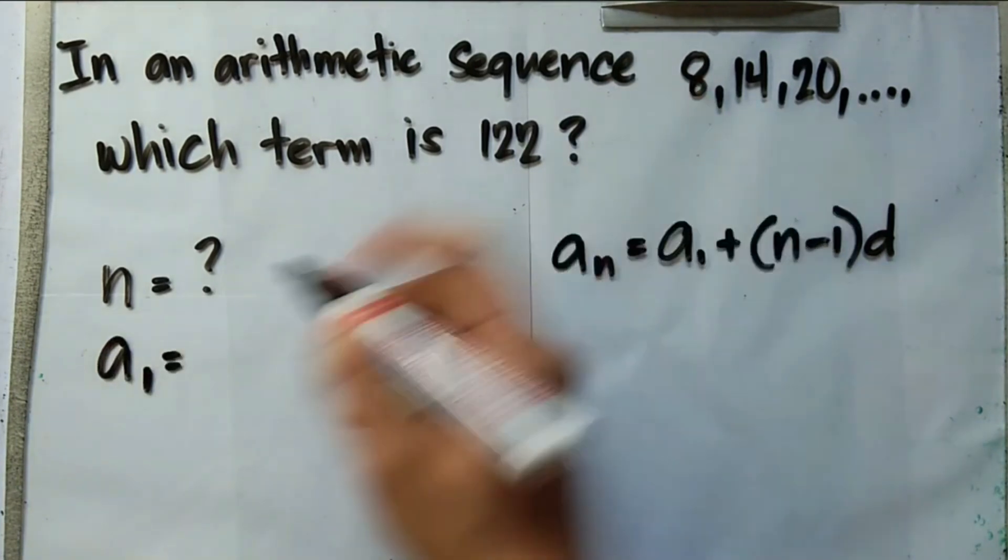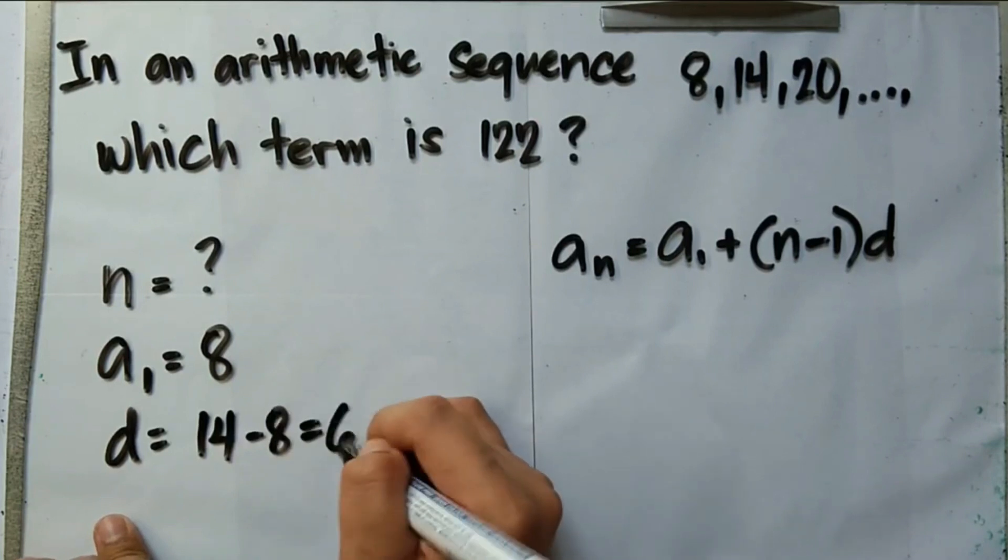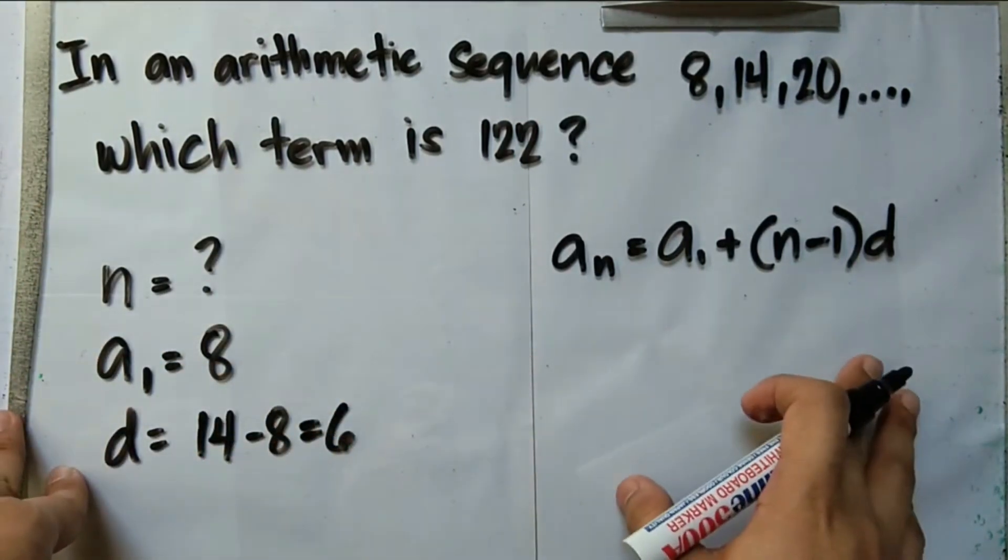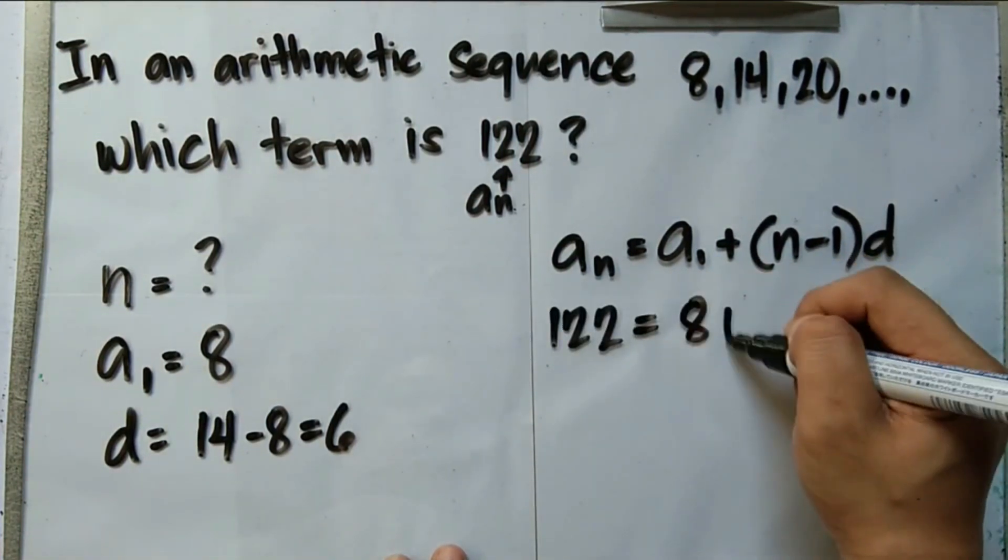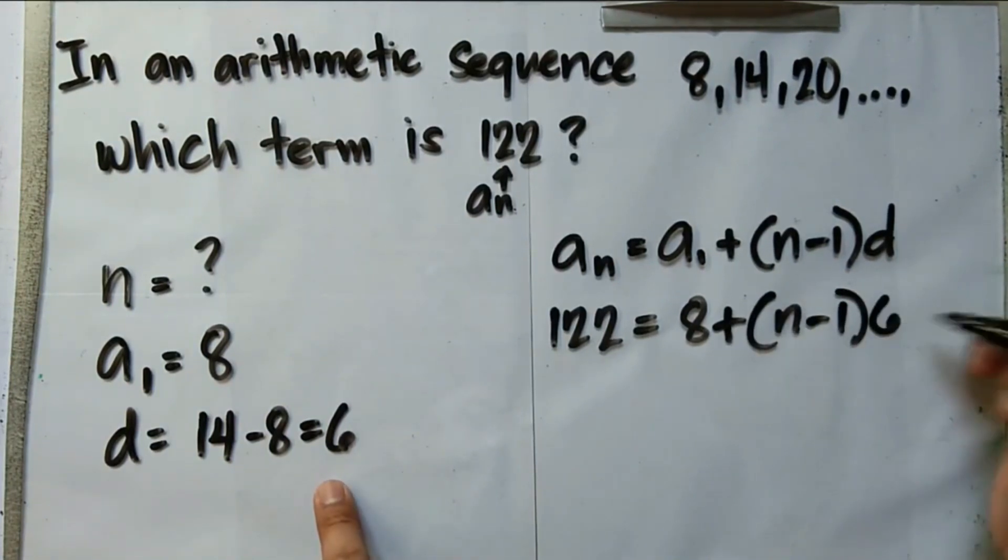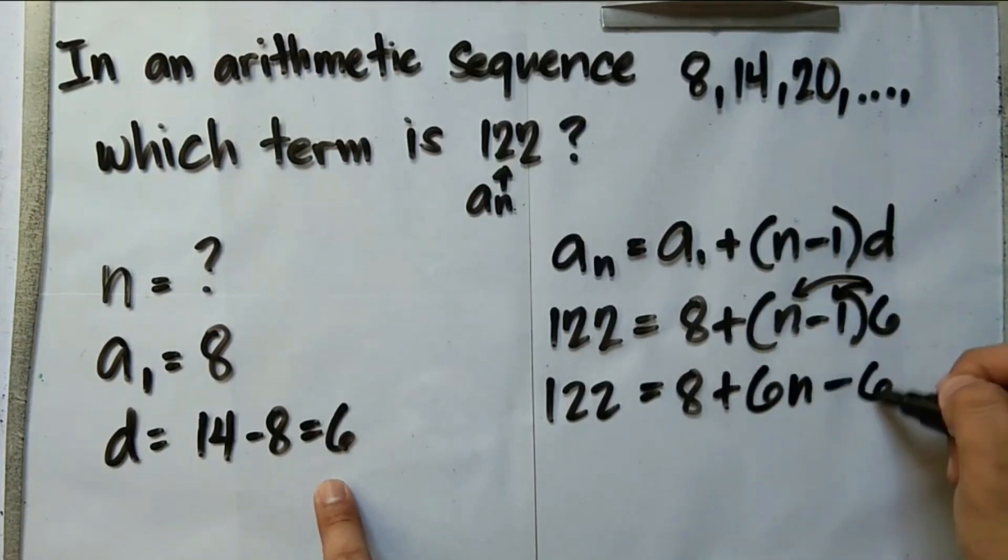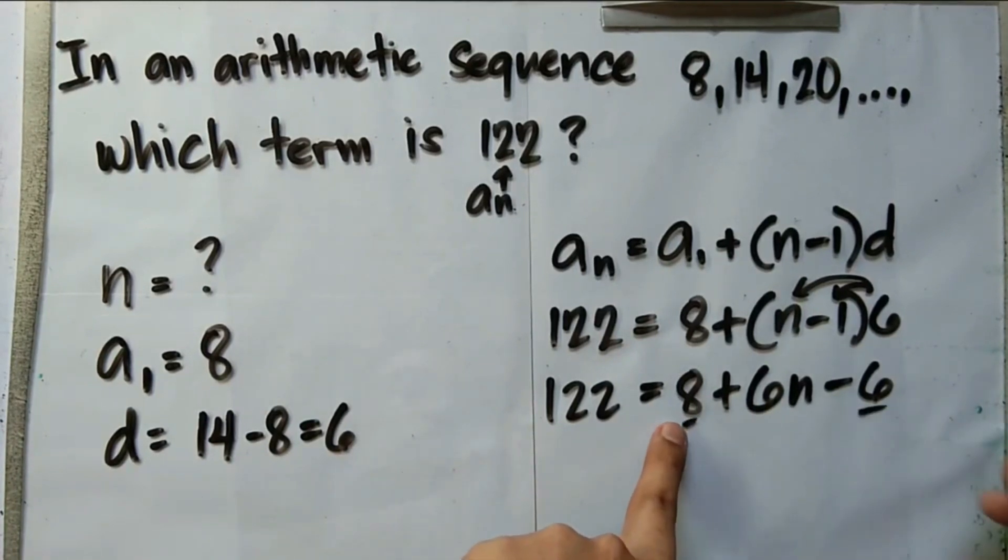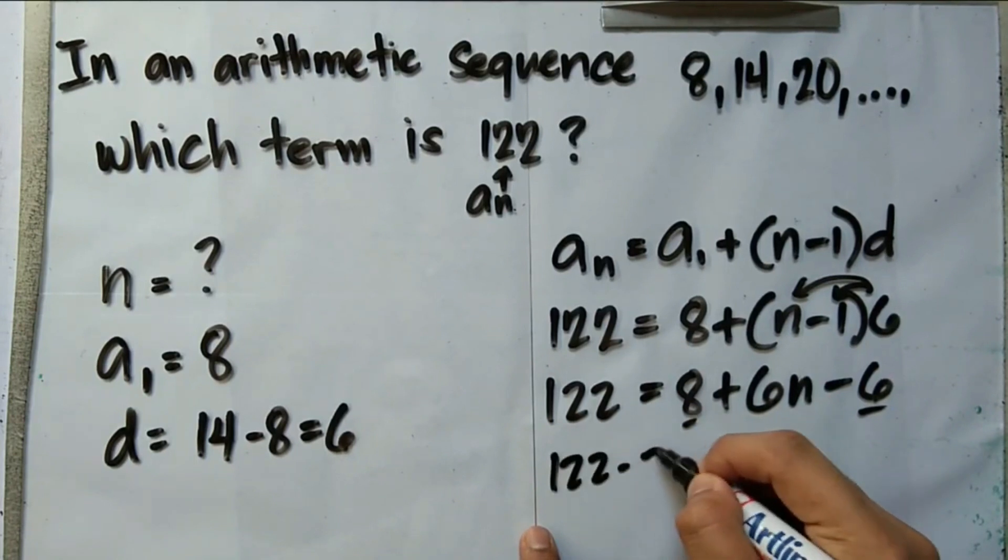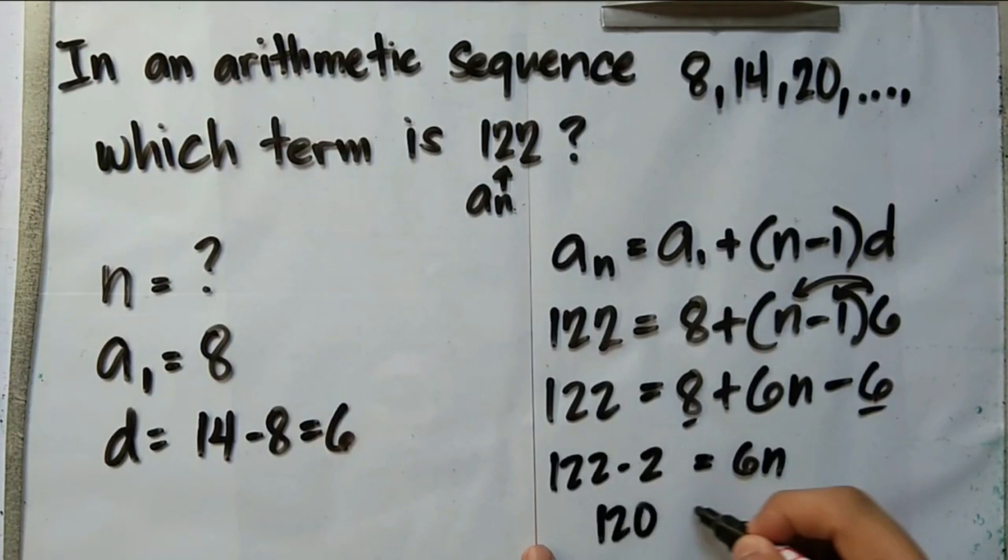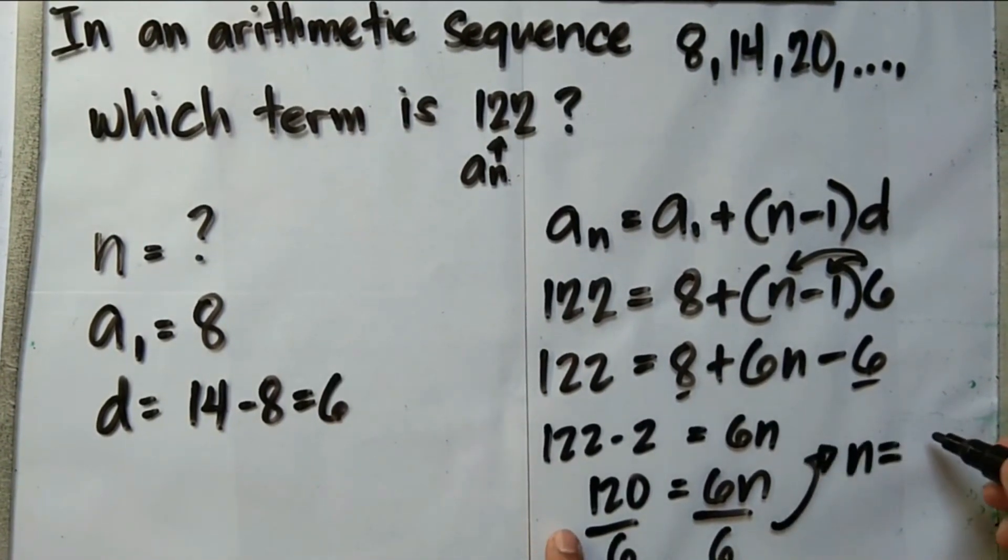So a₁ is 8. Common difference, that is 14 minus 8 or 20 minus 14, which gives us a value of 6. Then we can now substitute these values on our formula. Take note, 122 is aₙ. So this is 122 equals 8 plus n minus 1 times our common difference, which is 6. So evaluating the values, 8 plus distribute 6. So you have 6n minus 6, isolating the term with the unknown. You may now combine these two constant values, 8 minus 6 is 2, positive 2. When you transpose that to the other side of the equation, that would become negative 2. Then you have 6n. So you have 120 equals 6n. Dividing both sides by 6 will give us a value of n that is 20.